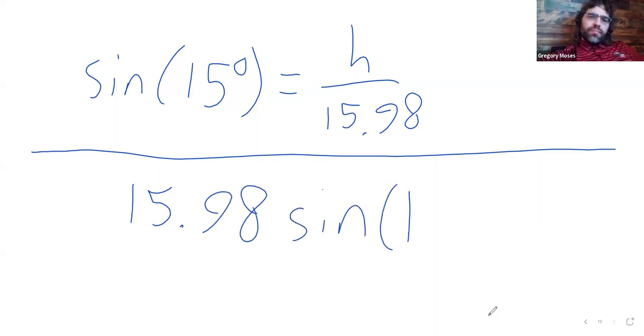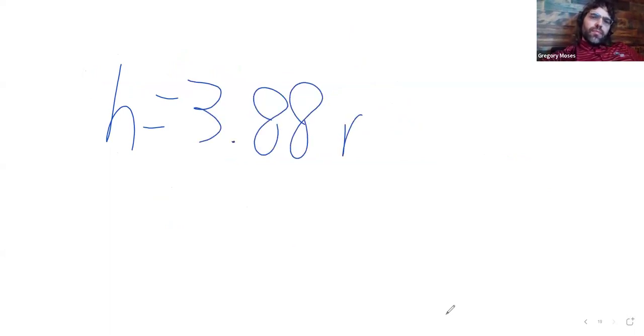Finally, plug that whole thing into a calculator and get 3.88. So the airplane is 3.88 miles above the ground.